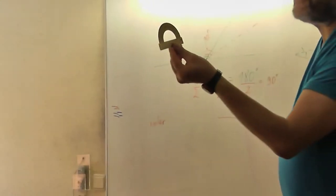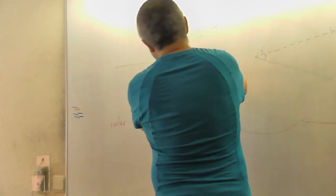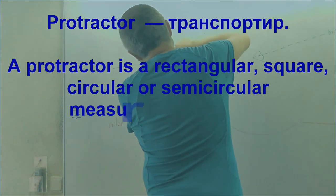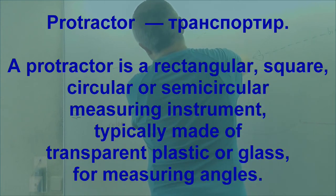I see it. So there is some device for measuring angles. We put it here. And we see that this angle is 50 something degrees. And this angle is 120 something degrees.